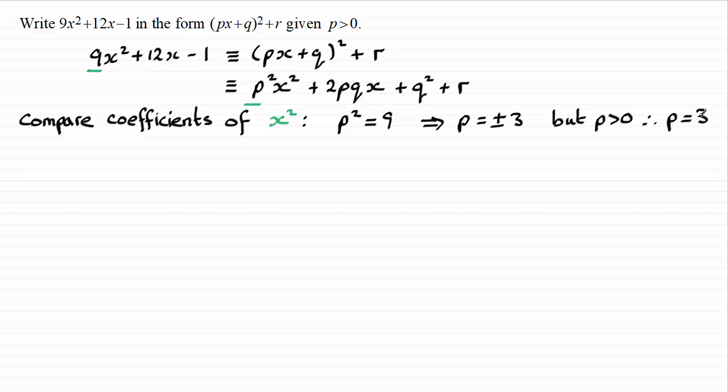Next, I'm going to try and work out what the value of q is now that I know what p is. And I can do that by comparing the coefficients of x. I can see the coefficient of x here is plus 12. And we've got 2pq over here as the coefficient of x. So I can say then that 2pq must be equal to the 12. So it's 2 times p. p we now know is 3, though. So we've got 2 times 3 times q must equal the 12.